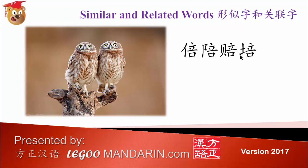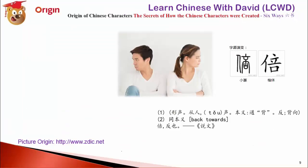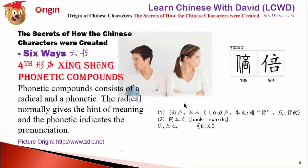The character 倍 (pèi/bèi) can mean: to accompany, a company, a girlfriend, to buy things, to compose, to nurture, or a result. Originally 倍 depicted two people standing back to back — like a couple who are angry at each other, turning their heads to the other side. That's the original meaning: two people back to back, in trouble.